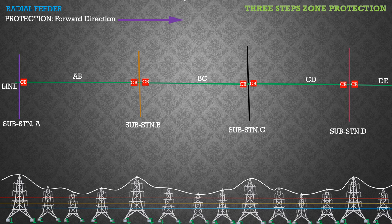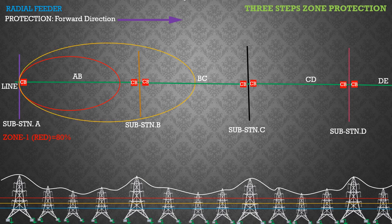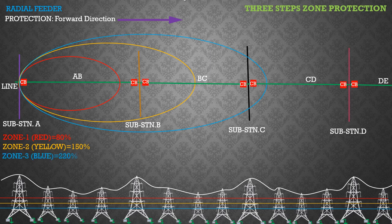The relay at substation A has the following zones: Zone 1 covers 80% of line AB; Zone 2 covers 150%, that is 100% of AB plus 50% of BC; Zone 3 covers 220%, that is 100% of AB plus 100% of BC plus 20% of CD. All protected sections have a length assumed to be 100%.